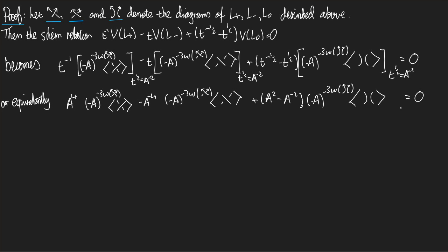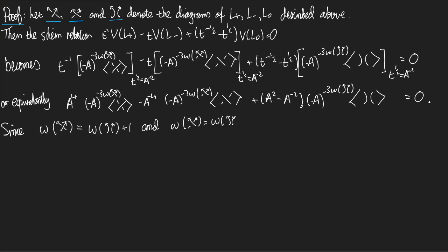I've done the substitution, so instead of proving the original skein relation it's enough to prove this third equation. Now let's understand the writhe and get rid of it. The writhe of the positive crossing diagram is the sum of the signs of all crossings — those are exactly the same crossings as in the smoothed diagram, plus the sign of the crossing I smoothed away, which is plus one. Similarly, the writhe of the negative crossing diagram is the writhe of the smoothed one minus one.